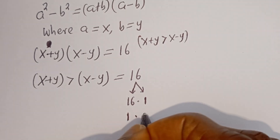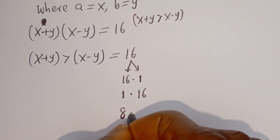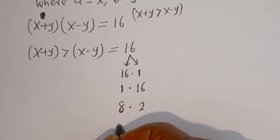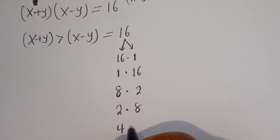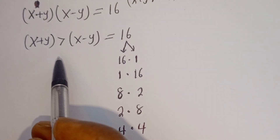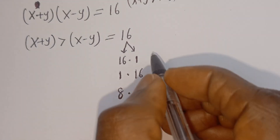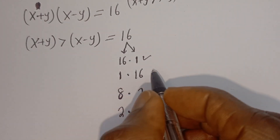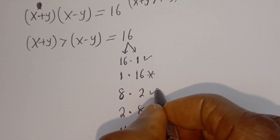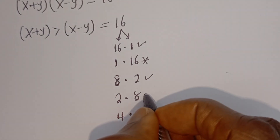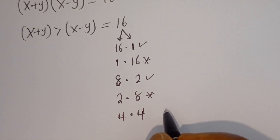Then 1 multiplied by 16, then we have 8 multiplied by 2, 2 multiplied by 8, and then 4 multiplied by 4. Now since x plus y is greater than x minus y: 16 greater than 1 — accepted; 1 less than 16 — rejected; 8 greater than 2 — accepted; 2 less than 8 — rejected; and 4 equal to 4 — rejected.